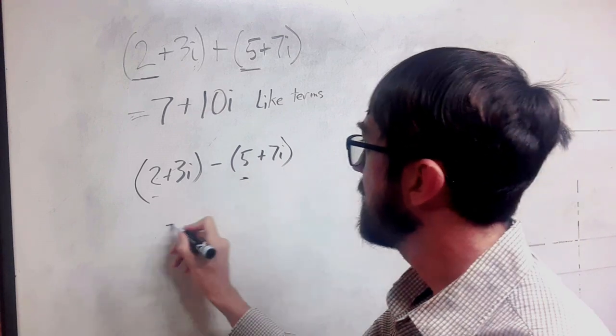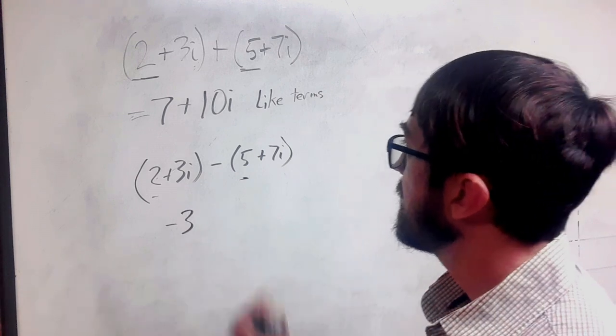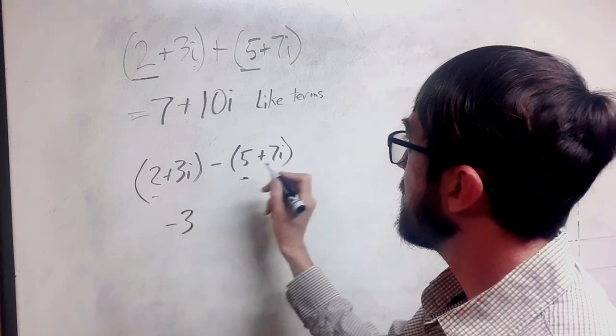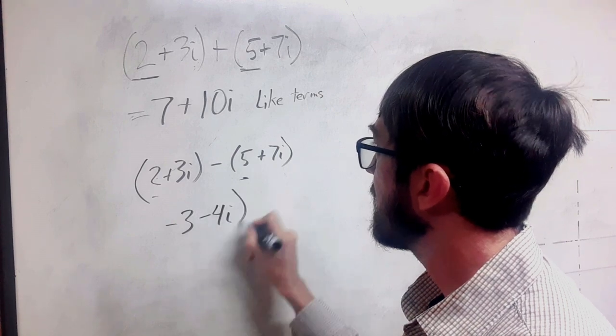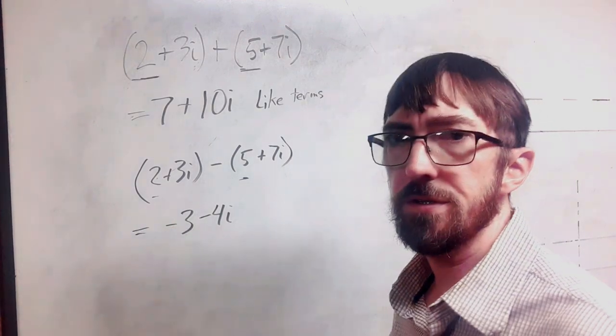So I want 2 minus 5, that's negative 3. And then I have 3 minus 7, that is going to be negative 4i. So this is our difference.